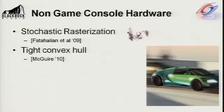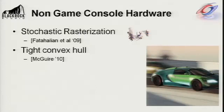We're also awaiting further console hardware generations where stochastic rasterization might be possible. A couple of months ago, Maguire presented a method for tight convex hulls around stochastic rasterized primitives, although there are still noise issues to address with that method, and we can't use it on current console hardware.